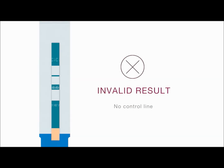Invalid result — no control line: if there is no red control line in the control area of the test unit, even if a red line appears in the lower test area or the upper test area of the test unit, the result is invalid and the test should be repeated. If the problem persists, contact ALEA Technical Support.